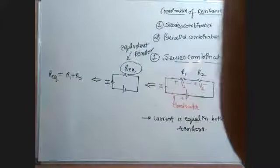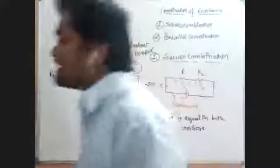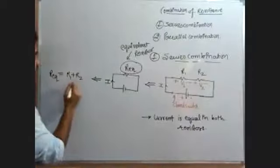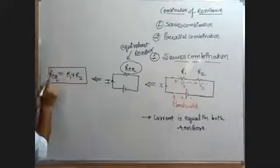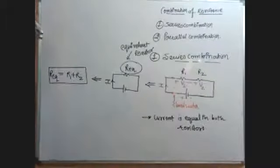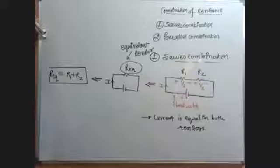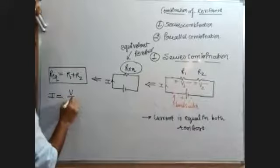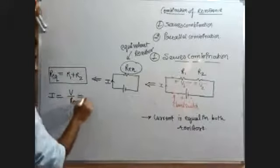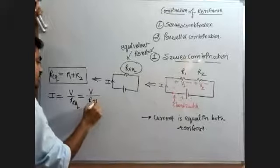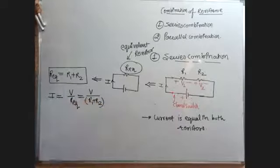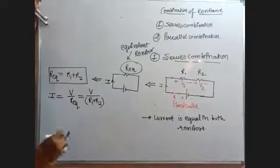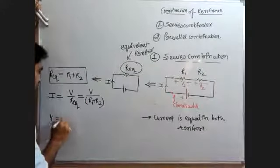The value of equivalent resistance is equal to R1 plus R2. The current I is equal to V divided by R-equivalent, which equals V divided by R1 plus R2. And if we talk about V1, it is equal to I into R1. Similarly, V2 can be found by putting the values.